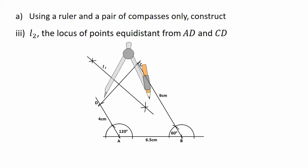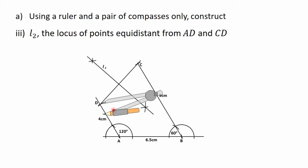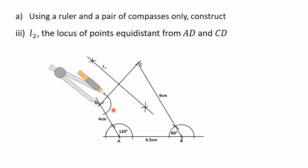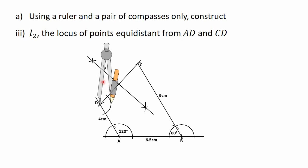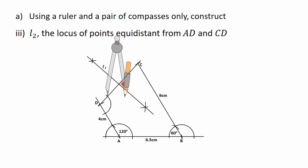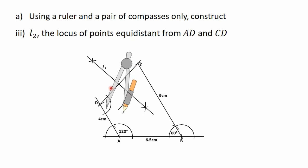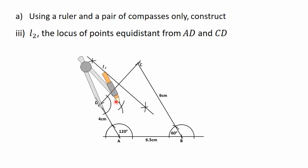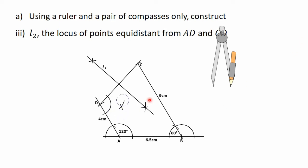To bisect the angle at point D, I'll move the needle of the compass to point D, then adjust the compass to a reasonable radius. After that, I'll turn it and construct an arc to intersect the line AD and the line CD. Then I'll move the needle to the point of intersection of the arc and line CD, adjust the compass a little, and construct an arc. With the same radius, I'll move the needle to the point of intersection of the arc and line AD, then construct an arc to intersect the first one. I'll then clean the excess parts of the arcs.